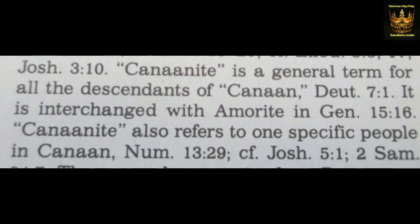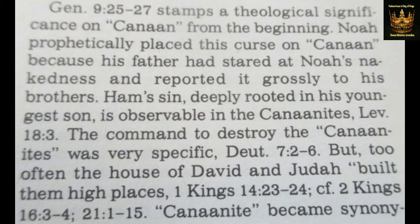Genesis 9:25 through 27 stamps the theological significance on Canaan from the beginning. Noah prophetically placed this curse on Canaan because his father Ham had stared at Noah's nakedness and reported it grossly to his brothers. Ham's sin, deeply rooted in his youngest son, is observable in the Canaanites. Leviticus 18:3 — the command to destroy the Canaanites was very specific. This is where Yahweh told Joshua and the tribes to kill and destroy the various tribes, because they are also related to the Nephilim, which I'll show you in a little bit.